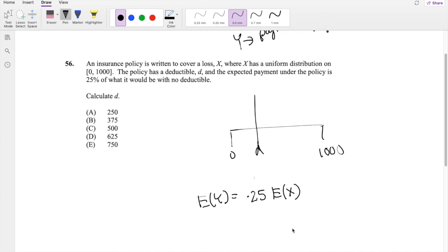So we know the expectation of X, where this is our X right here, would just be B plus A over 2. In our case, B is 1000, A is 0 over 2, which is equal to 500. So that's 0.25 of 500, which is equal to 125.